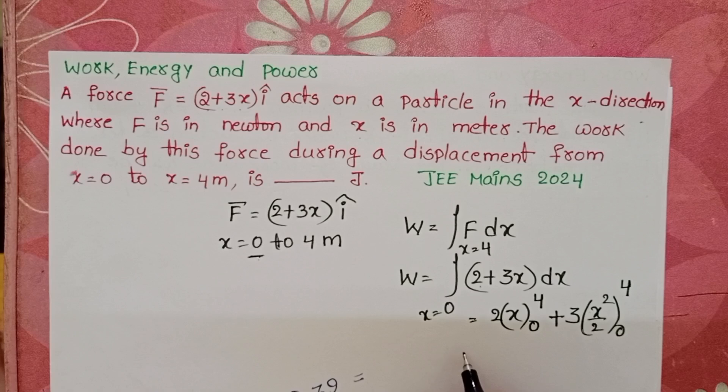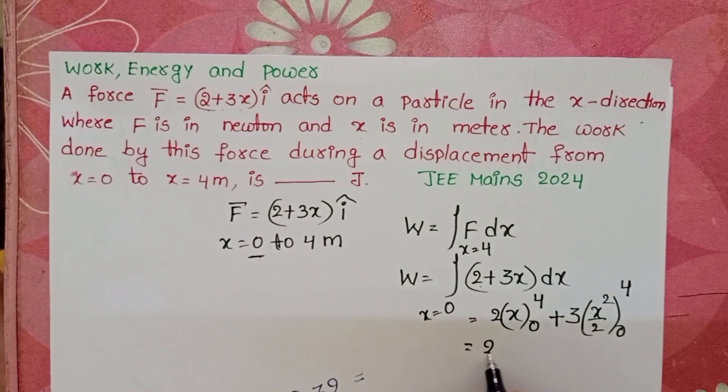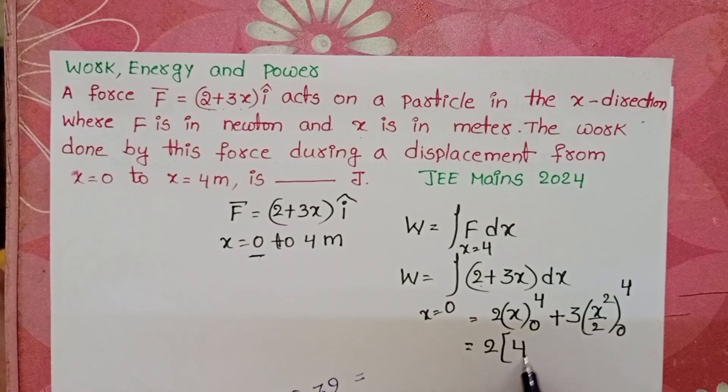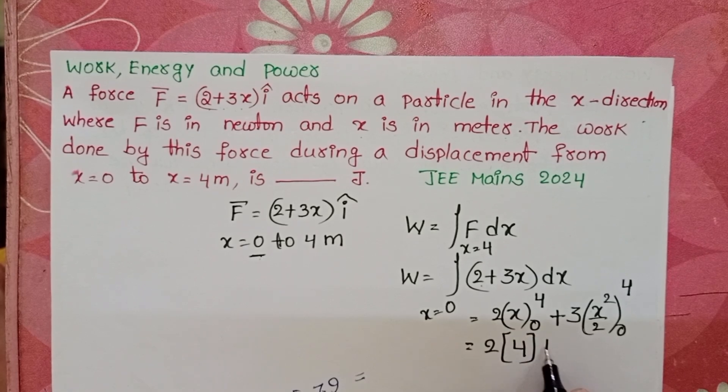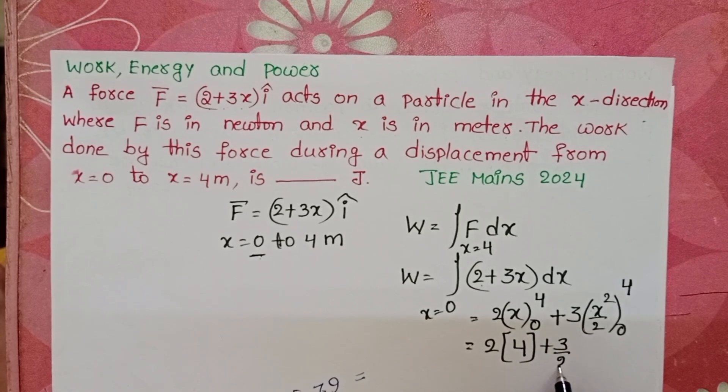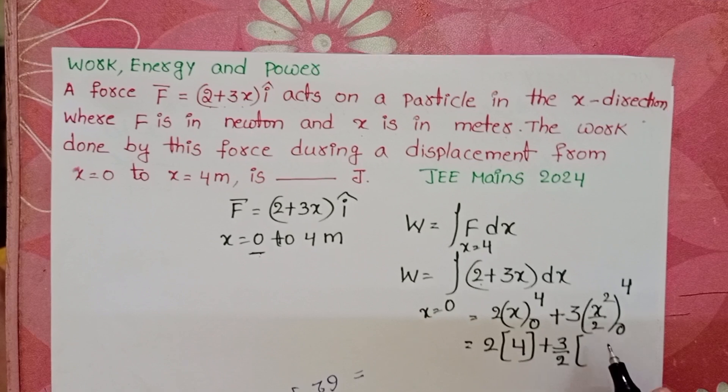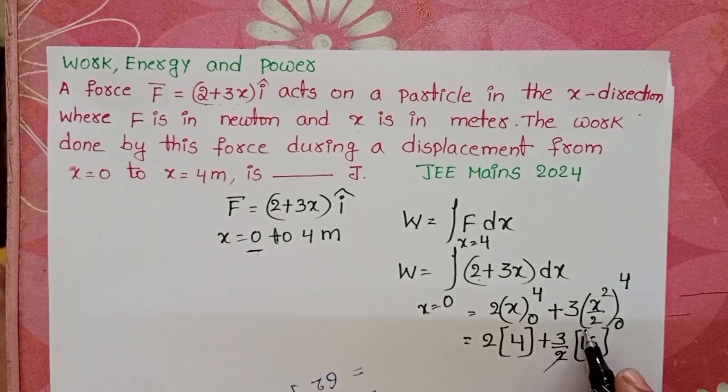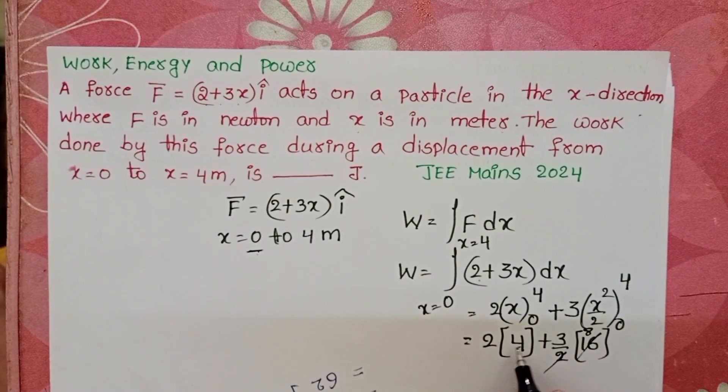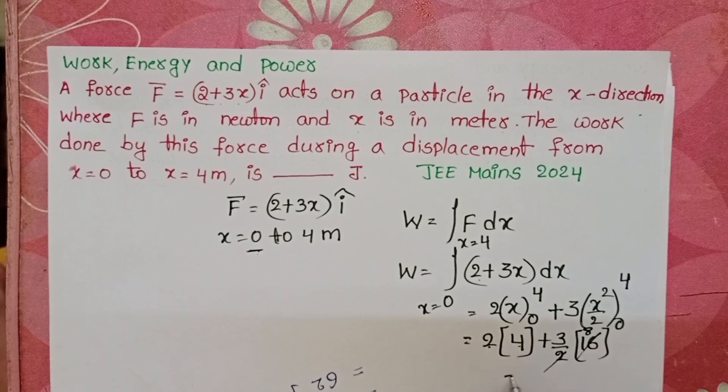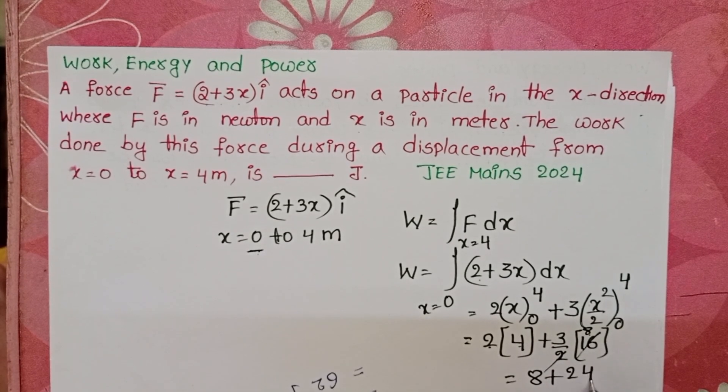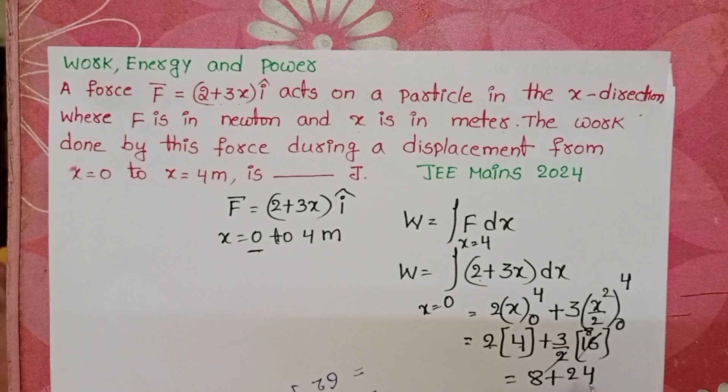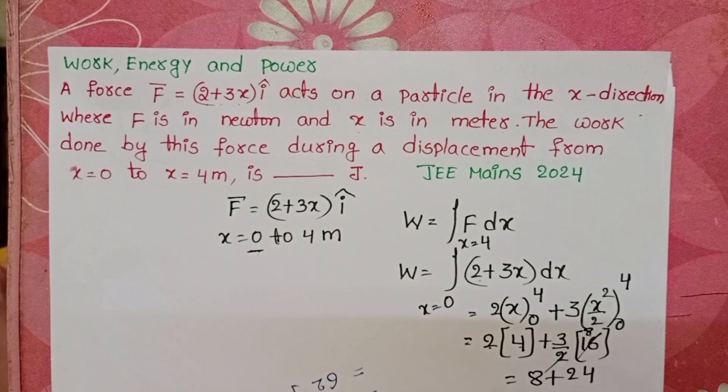First substitute the upper limit. 2 into 4, and lower limit is 0, gives 4 minus 0 equals 4. Plus 3 by 2 into 4 squared, which becomes 16. This gives us 2 times 4 is 8, and 3 by 2 into 16 is 24. 24 plus 8 equals 32. 32 joules.